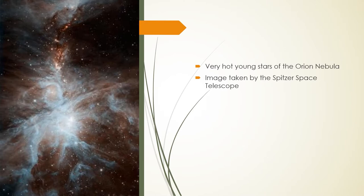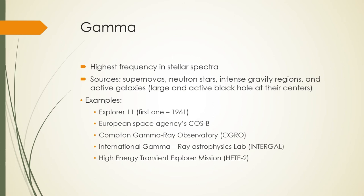With UV you can see very hot young stars, such as what we see in the Orion Nebula — this image was taken by the Spitzer Space Telescope. Gamma frequency is the highest energy radiation, resulting in extremely short wavelengths. Sources of gamma radiation include supernovas, neutron stars, intense gravity regions, and active galaxies with large active black holes at their centers. Spacecraft used to observe gamma radiation include Explorer 11 in 1961, the European Space Agency's COS-B, the Compton Gamma Ray Observatory, and the International Gamma Ray Astrophysics Laboratory (INTEGRAL).